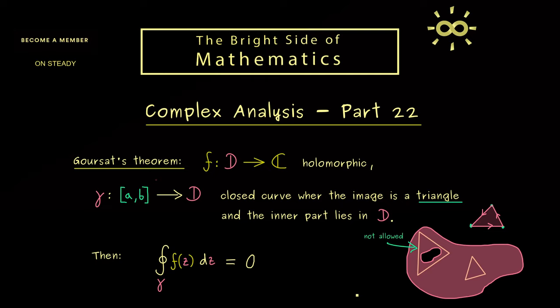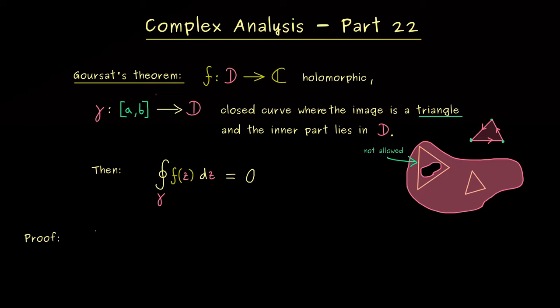This is already a very strong result because it holds for any holomorphic function. For the rest of the video I can show you the proof. We already have everything we need: the basic idea is that we already know the integral changes its sign when we change the direction of a curve. In other words, if we go to one point and go backwards again, then the integral is 0.